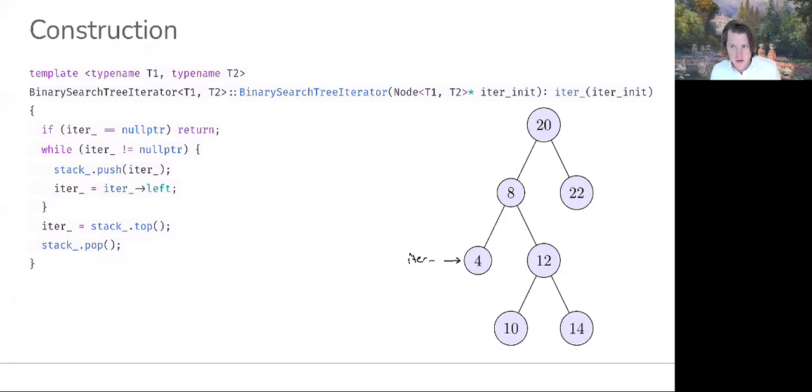So let's begin looking at this. Our parameter iter_init is going to be initialized with the address of the root node. That's how we'd invoke this. We'd create a new binary search tree iterator and we'd pass in the root of the tree for which this will become an iterator. We initialize iter with that address and then jump into the body of this function.